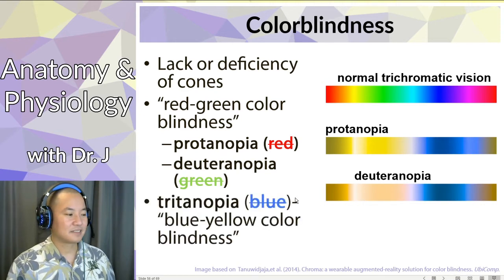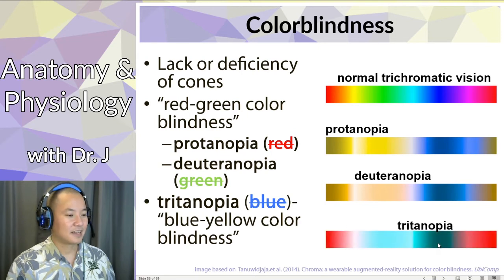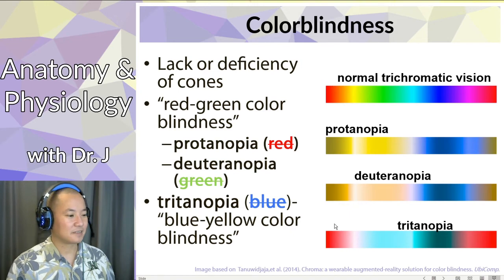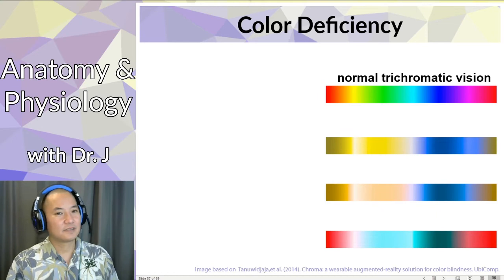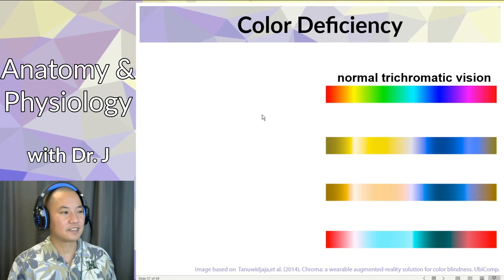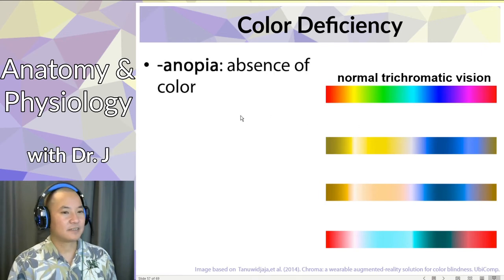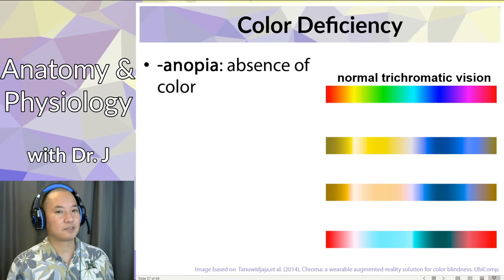Tritanopia is interesting because it's pretty rare — it's due to a lack of blue cones. With tritanopia, blue is kind of washed out; you see red, but the green appears as a weird blue color instead. Full color deficiency, meaning a complete lack of cones, is rare. When you have protanopia, deuteranopia, or tritanopia, that's the total absence of that color cone altogether.